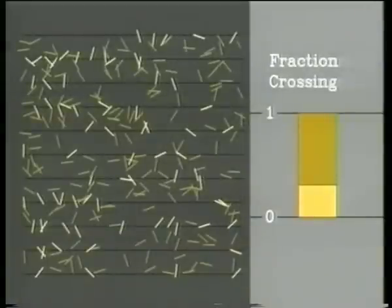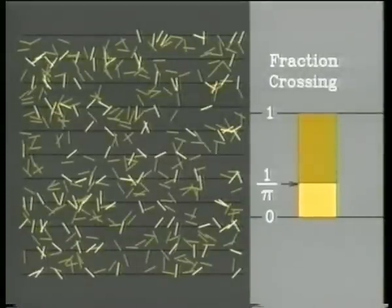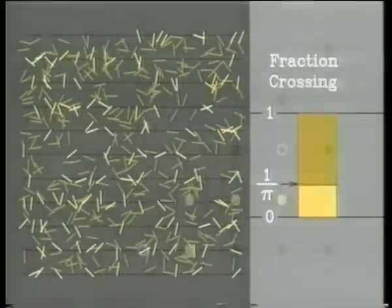But it also shows up in some problems where there are no circles at all. For example, drop a needle on a floor whose boards are twice as wide as the needle length. The needle might land on a line or it might not. Drop lots of needles—the probability that a needle crosses a line is one over pi.